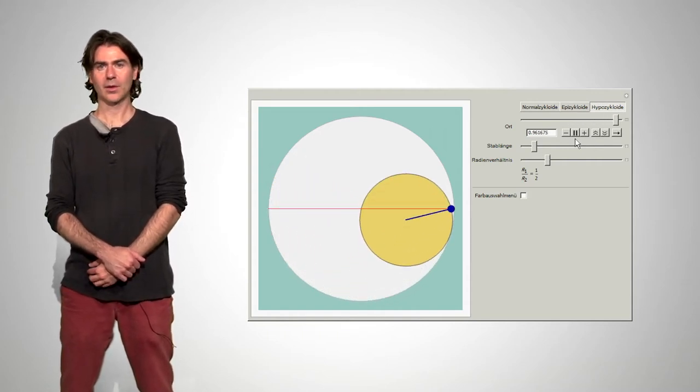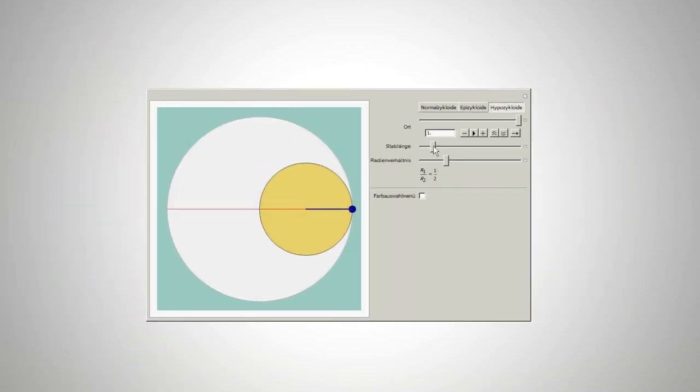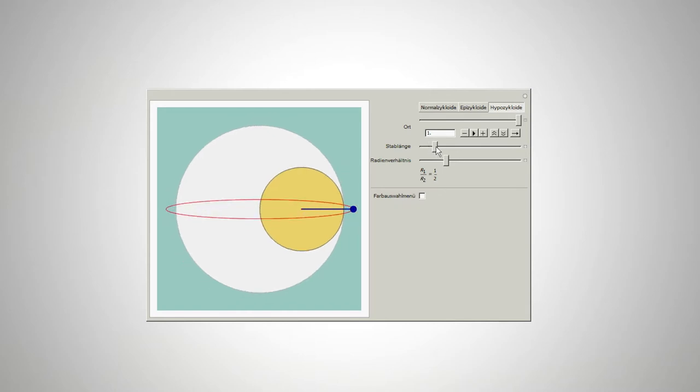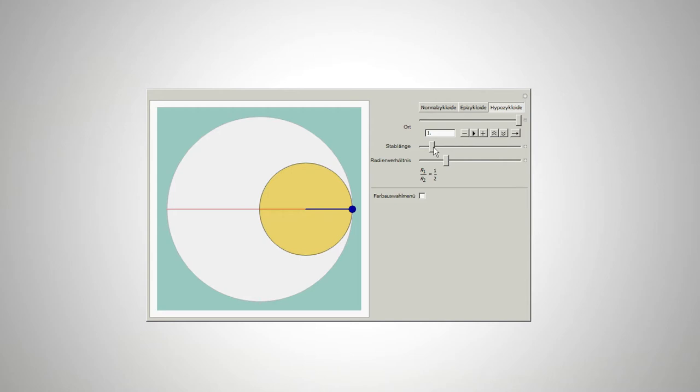Let's change the length of the pole. As you see, the curve according to a proportion of radii from 1 to 2 is always an ellipse. The length of the pole influences the major and minor axes of the ellipse. And when s is equal to r1, the vertical axis of the ellipse is exactly 0. This curve, which looks like a line, is really just mathematically a degenerate ellipse.